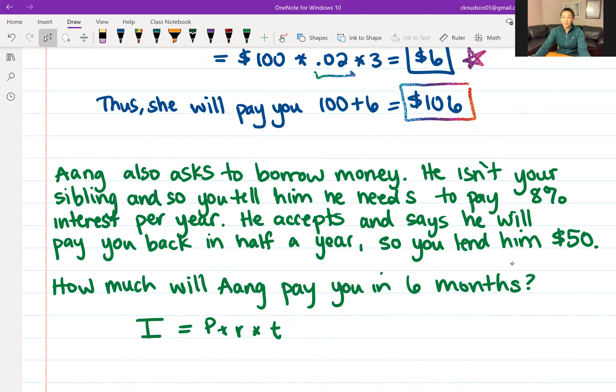Ang is also wondering if he can borrow money. He isn't your sibling, so you're not going to give him as good of a deal. You tell him that he needs to pay 8% interest. However, you're still pretty nice. You tell him simple interest is good, not compound interest, so he doesn't have to pay interest on the interest. He says 8% isn't bad. Very well, he'll go ahead and go forward with this deal, and he says he'll pay you back in half a year, six months. So you decide to lend him $50. How much money will Ang pay you in six months?